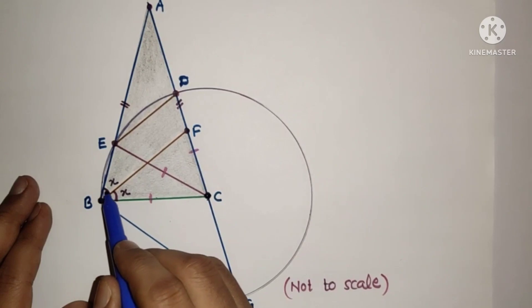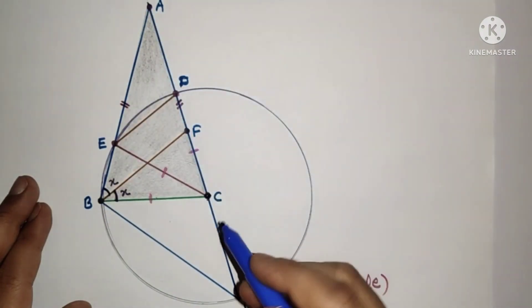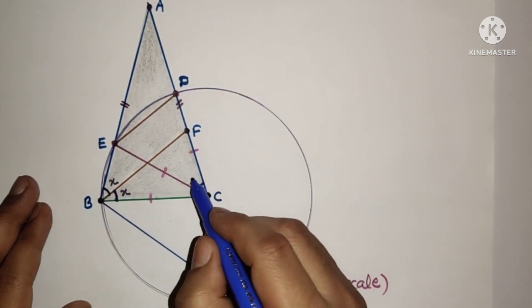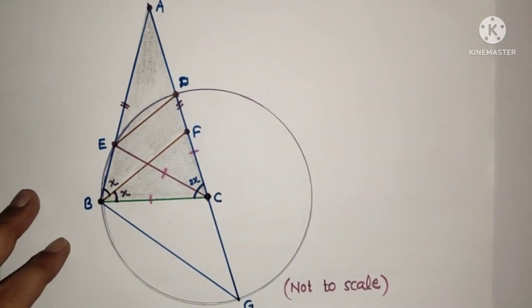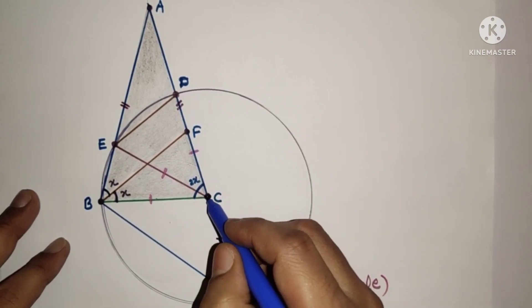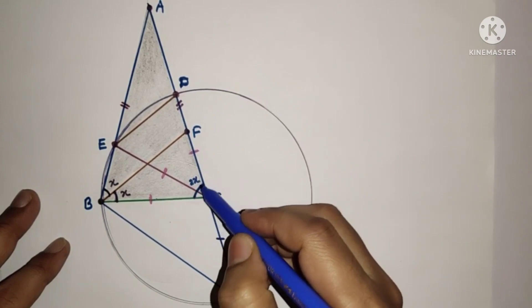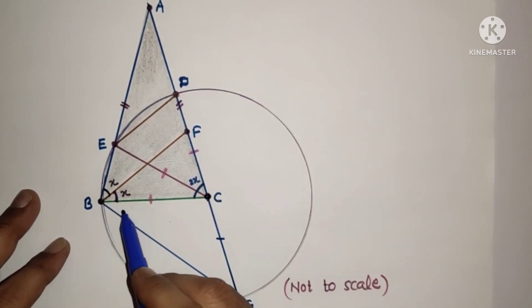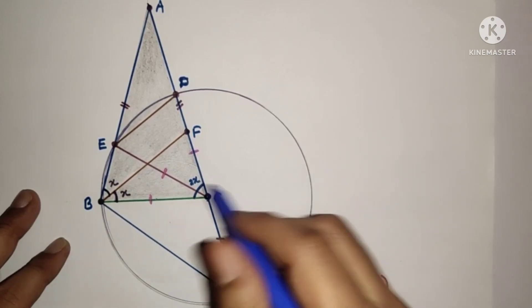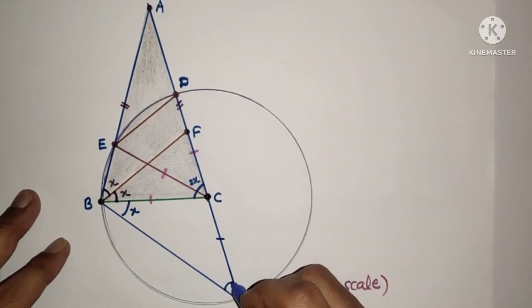Since BF bisects the angle, let each half be x. Since AB equals AC, angle ACB is 2x. BC equals CG because CB and CG are radii, so triangle BCG is isosceles. The exterior angle at C is the sum of the two equal base angles, giving 3x. So angle CBG is x, and the corresponding arc-related angles are x as well.